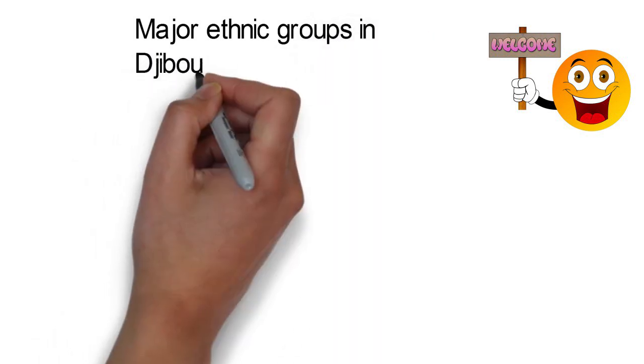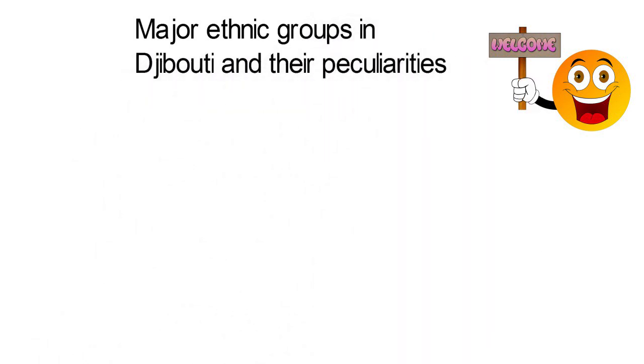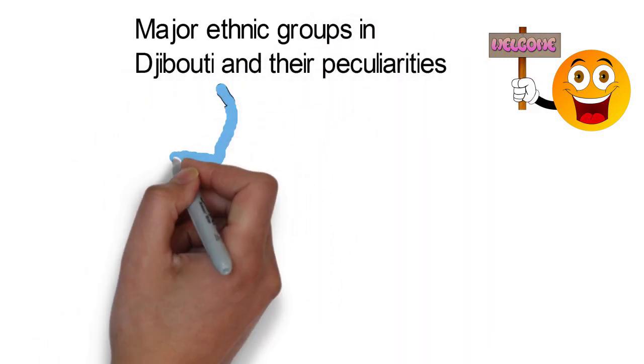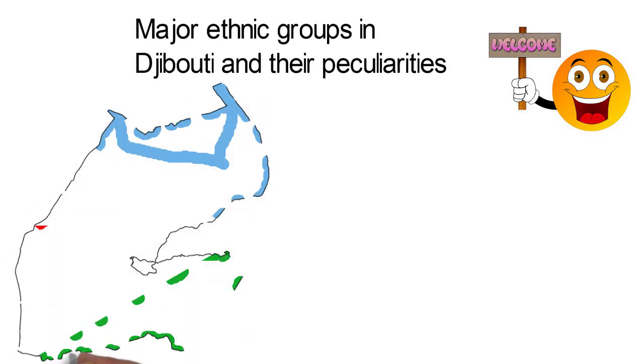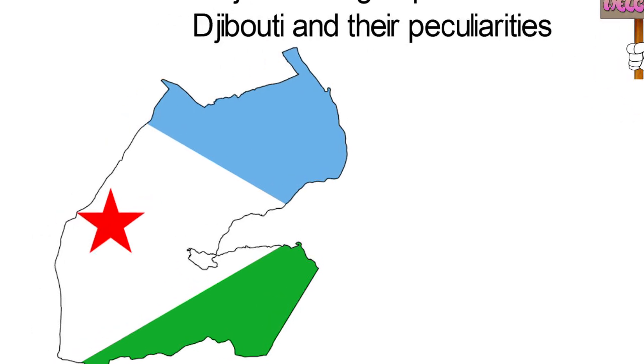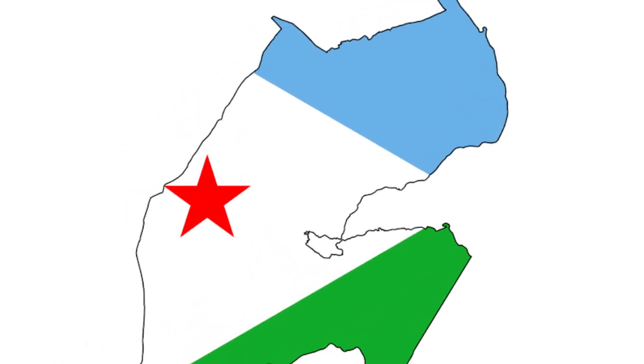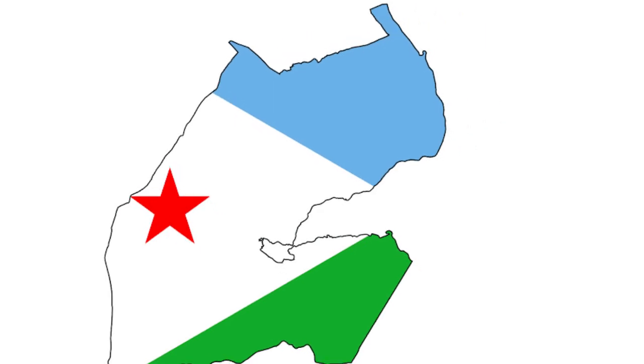Major Ethnic Groups in Djibouti and Their Peculiarities. Djibouti, with a population of about 921,804 people, is a multi-ethnic country. Of the many ethnicities in the country, the two largest and most predominant are the Somali and the Afar.